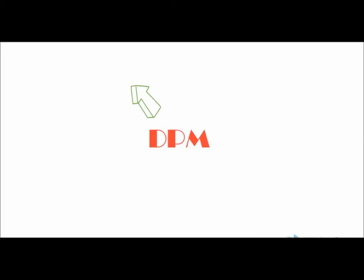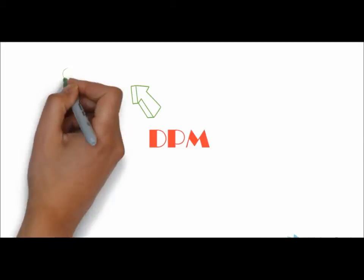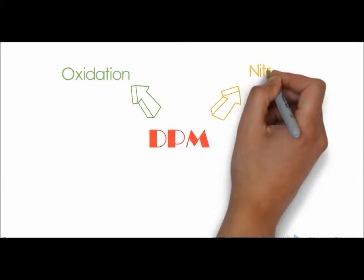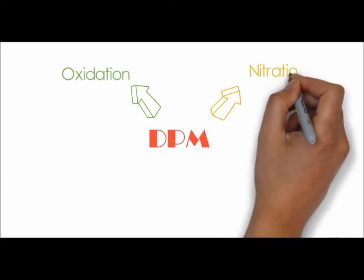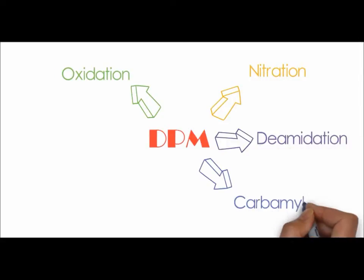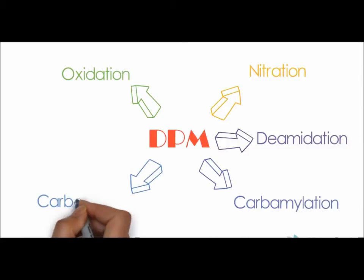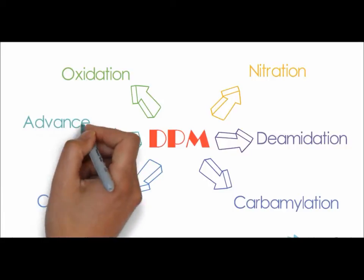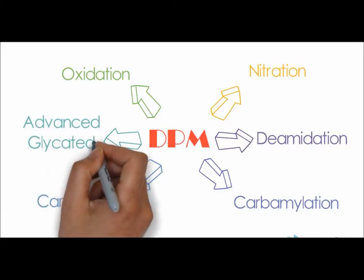Now we will look into what the different DPMs are. We have oxidation, nitration, deamidation, carbamylation, carbonylation, and advanced glycated end products.